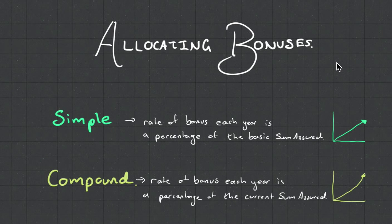There's also the compound bonus where they say we're going to increase your current sum assured by 1% every month. So in that case, if it was $1,000 and you're getting 1%, your bonus would be first $10 and then it would be $10.01, something like that.